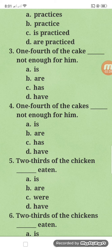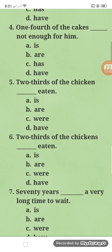For number four: one-fourth of the cakes. There are maybe ten cakes, and one-fourth of those cakes — we're referring to the number of cakes — so one-fourth of the cakes are not enough for him. It takes a plural verb. So: one-fourth of the cake is not enough, and one-fourth of the cakes are not enough.